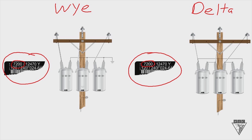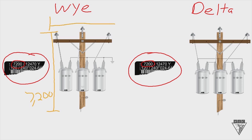With the Y connection, if the primary coil voltage matches the phase-to-ground voltage, it's a Y connection. If we had a phase-to-ground voltage of 7,200 volts, then we're going to hook these transformers up phase-to-ground. If your phase-to-ground voltage was 7,200 volts, that would give us a system voltage of 12,470.